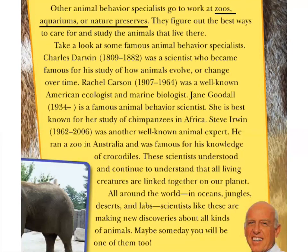The author gave us several examples of famous animal behavior specialists. The first one was Charles Darwin. It says he was famous for studying how animals evolve. I may be unfamiliar with the word evolve, but the author helps me out — knowing I may not have heard this word before, the author tells us exactly what evolve means by using a comma and giving us the definition: 'or change over time.' So evolve means change over time.